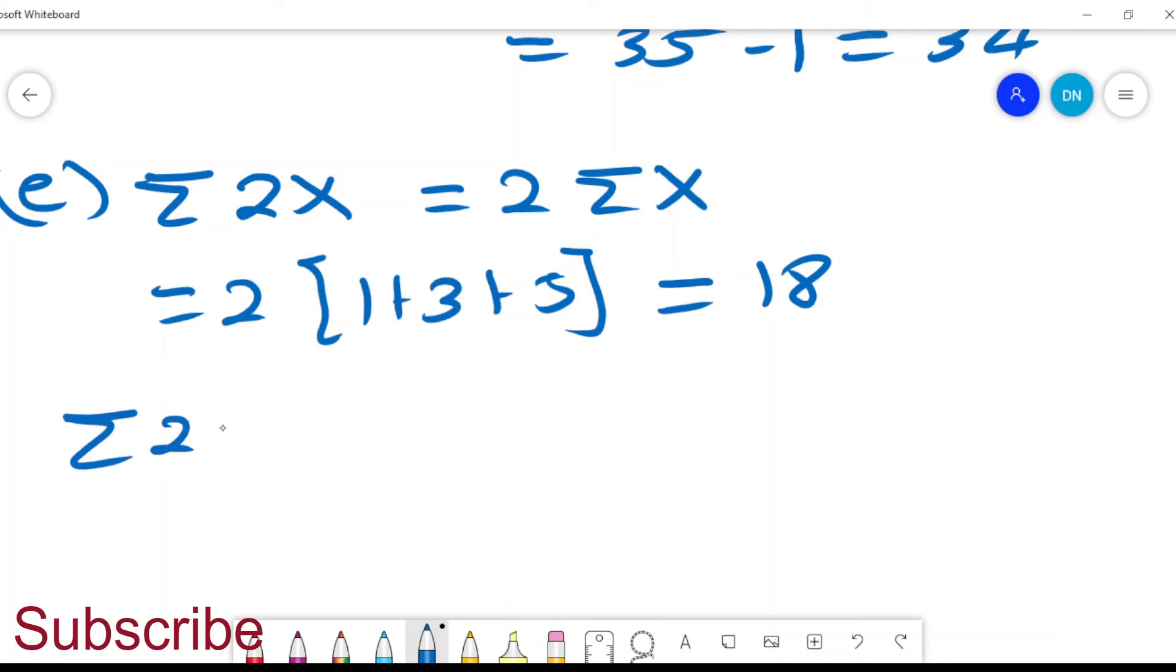It does not differ if I was to multiply every value. I could have also done the same: multiply 2 with 1, then multiply 3 with 2, and then multiply 2 with 5. So it will be 2 plus 6 plus 10, which will still give me the same answer. This is the same answer because 2 is a constant and therefore nothing much changes.